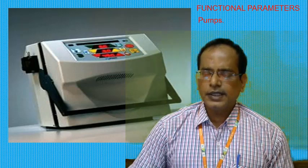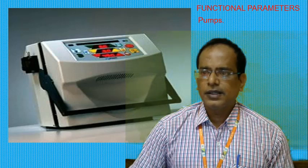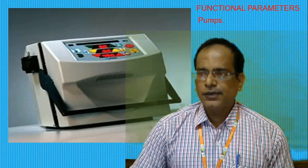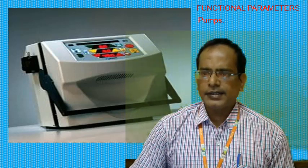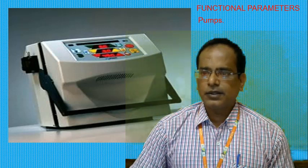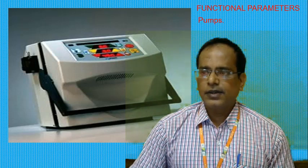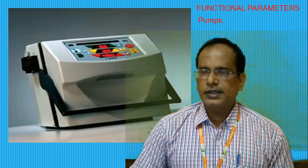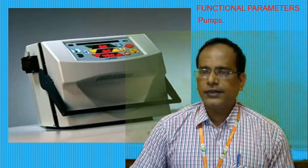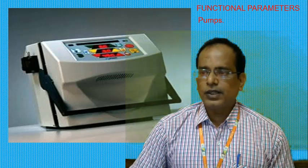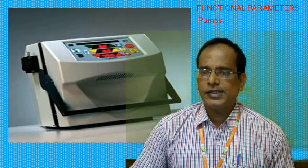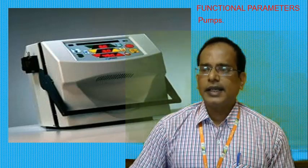The first functional parameter is pumps. Peristaltic pumps are commonly used for driving the various high-volume fluids in the machine — blood, dialysate water, and saline. This type of pump is convenient because it does not touch the fluid directly; instead, a section of flexible tubing runs through the pump mechanism where it is compressed by a roller to push the fluid forward.